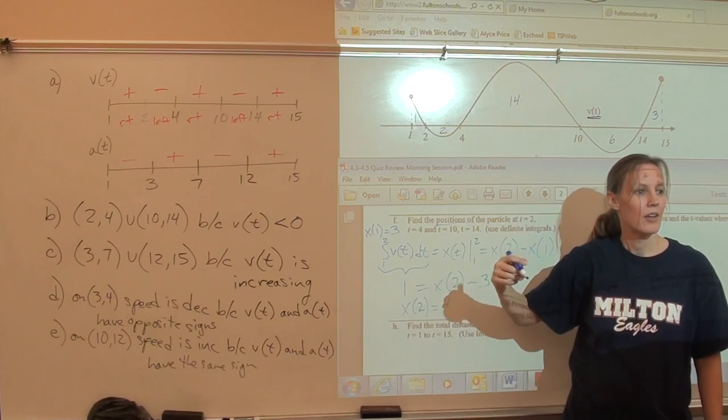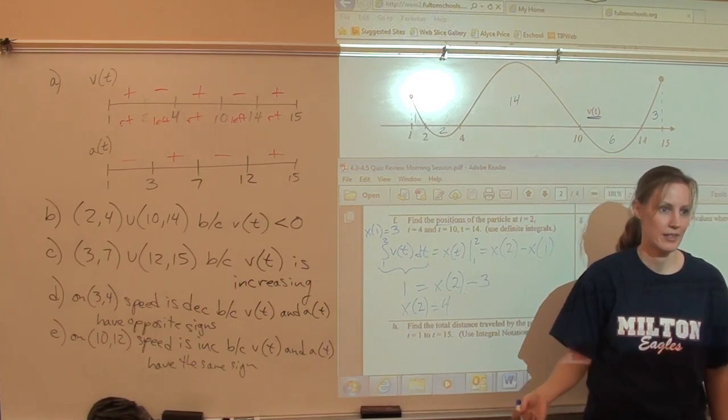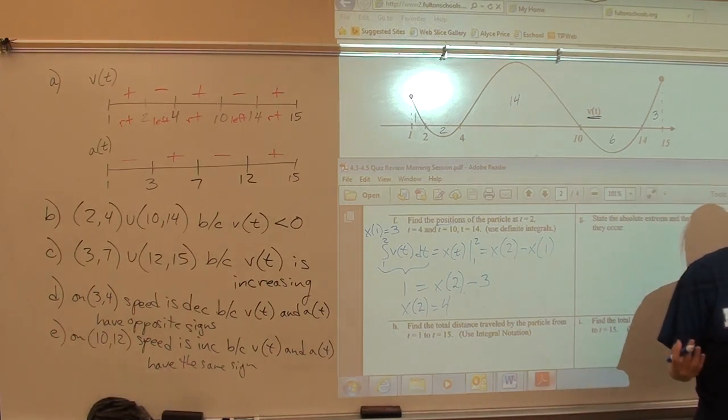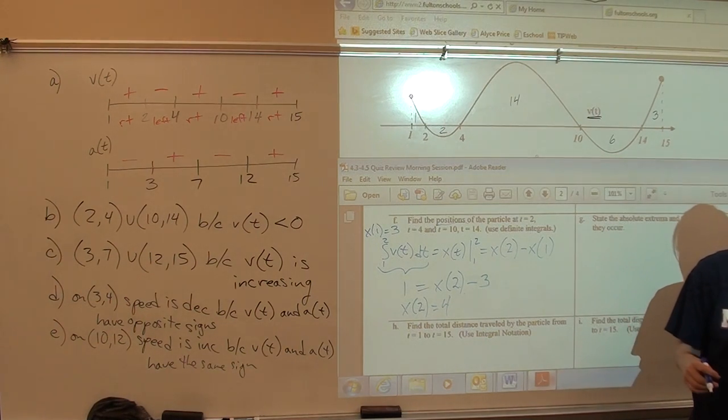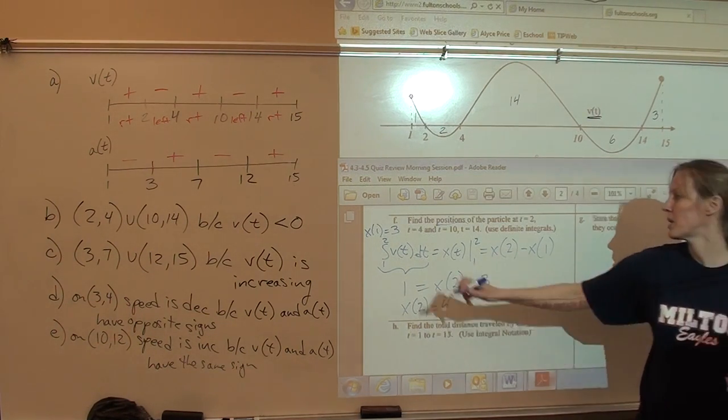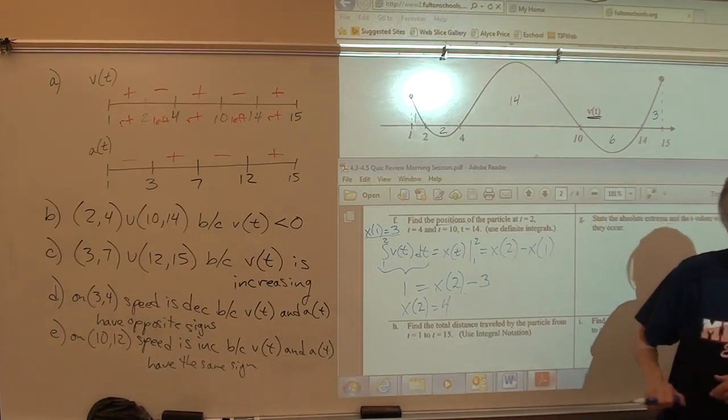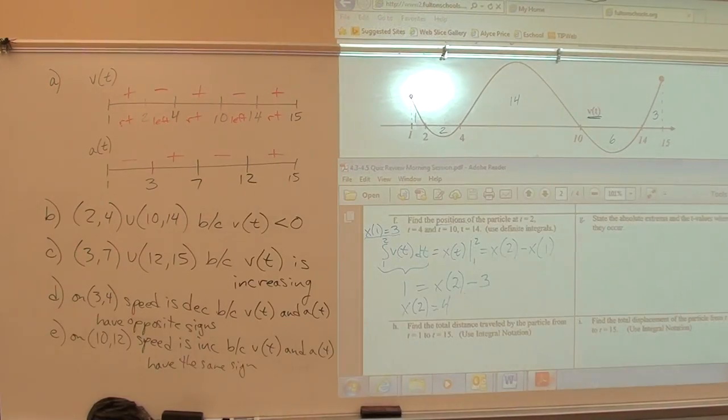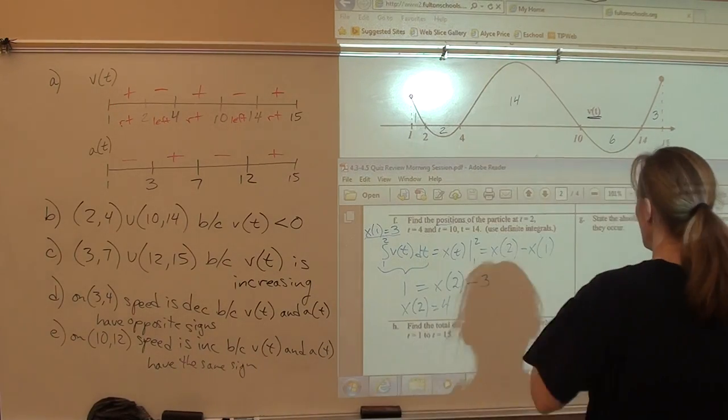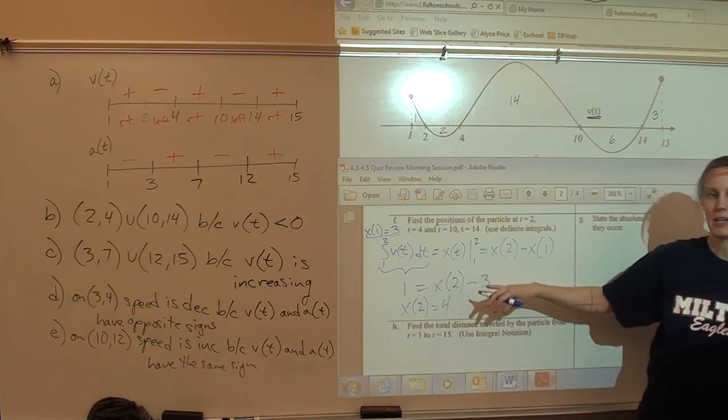Wait, why is there 3 for the x of 1? Because it was given at the beginning of the problem that x of 1 was 3. It says it right there. Any other questions about this?